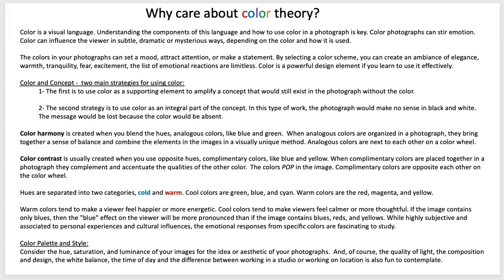Two of the main strategies when you think about color and concept: the first is to use color as a supporting element to amplify a concept that would exist in the photograph without the color. The second strategy is to use color as an integral part of the concept. In this type of work, the photograph would make no sense in black and white — the message would be lost because the color would be absent.